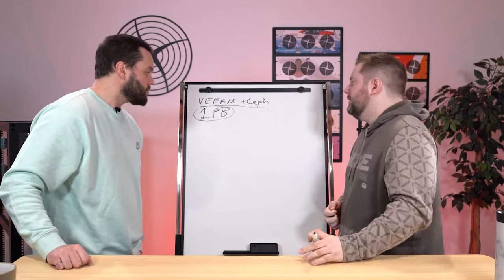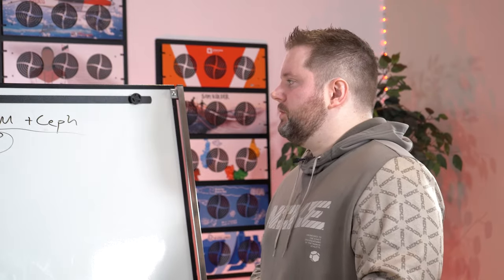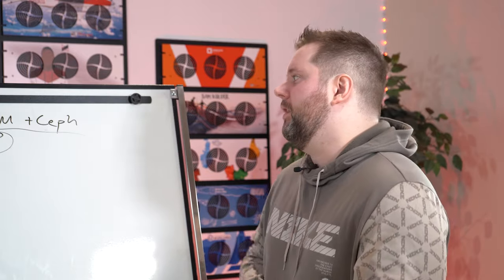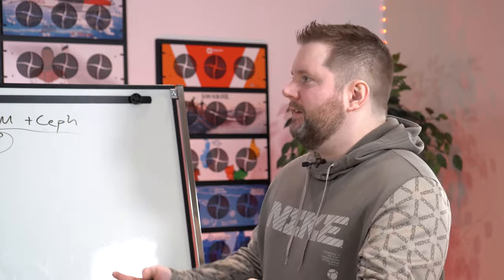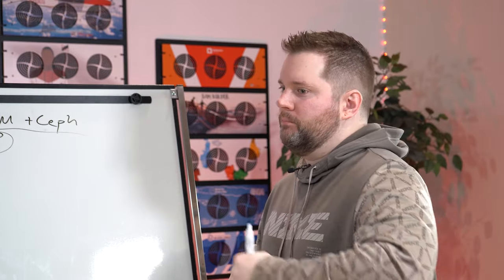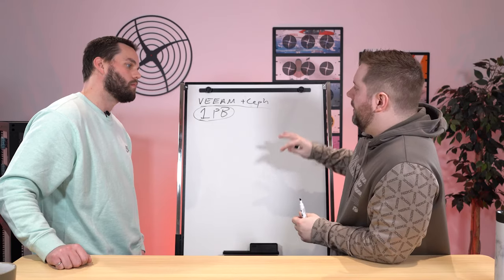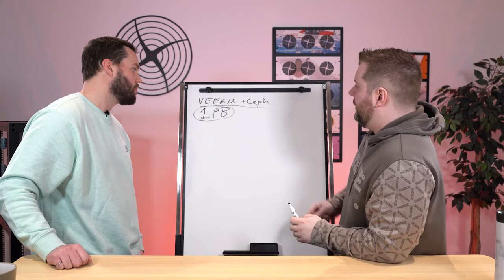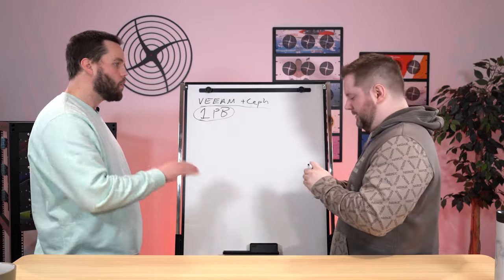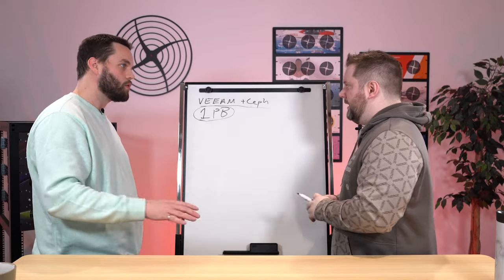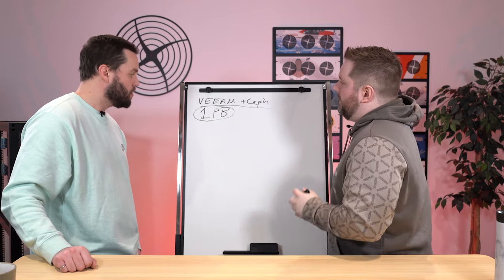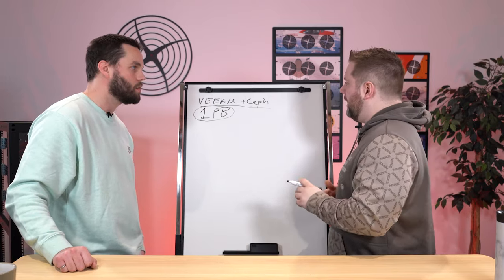The two main ways Veeam is going to use storage are block and object. Block is going to be the performance tier. Object you can see as the capacity tier — where it's no longer in the window where you may need to restore that backup very quickly. Let's focus on the block side for now. With Ceph, you have two main ways to do block storage. We're talking Ceph RBD — not CephFS.